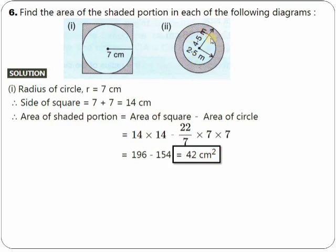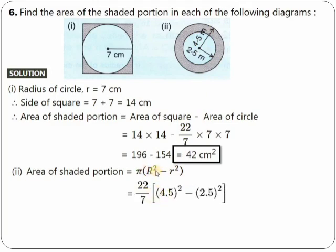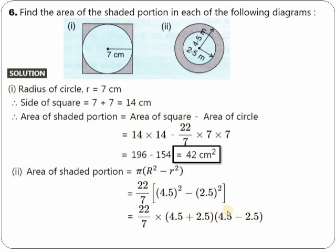The second problem looks like a ring, so we use the direct formula. Capital R (outer radius) is 4.5 and small r (inner radius) is 2.5 meters. Put the values: π = 22/7, R = 4.5, r = 2.5. Apply the a² − b² = (a+b)(a−b) formula. Here 4.5 + 2.5 = 7, which cancels with the denominator 7. Then 4.5 − 2.5 = 2. We are left with 22 × 2 = 44 cm². So the area of the ring (shaded portion) is 44 cm². Pause the video and note down your solution.